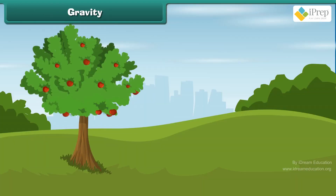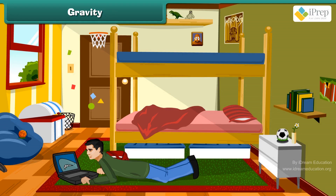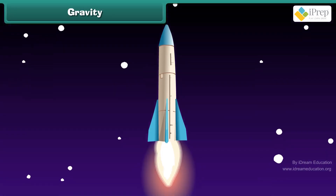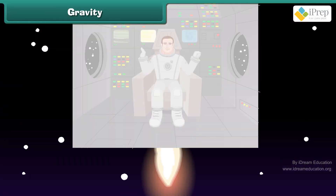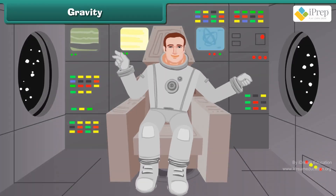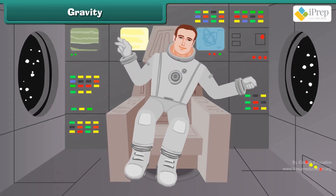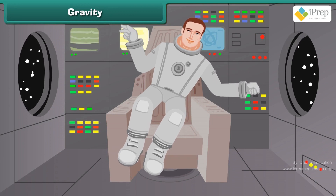Due to the gravitational force of the Earth, we don't fall off. This is the reason why things stay in their own places. This is something that space lacks. Therefore, everything keeps floating in space.